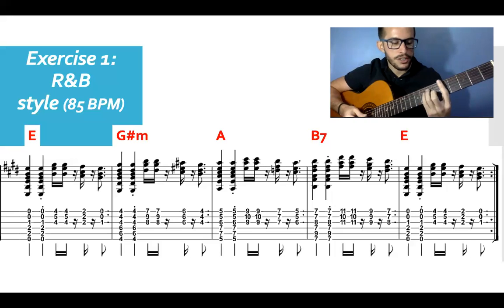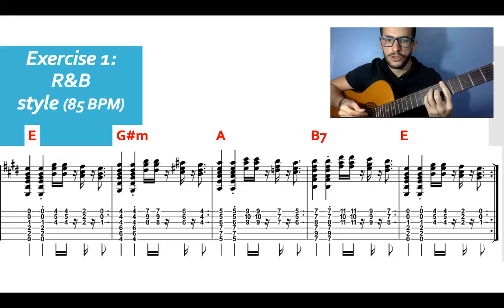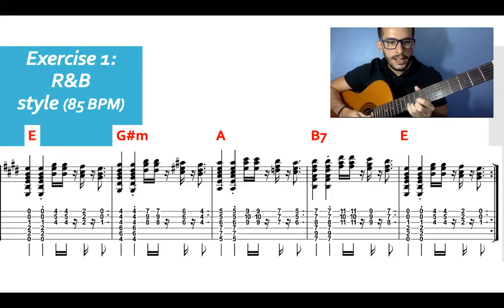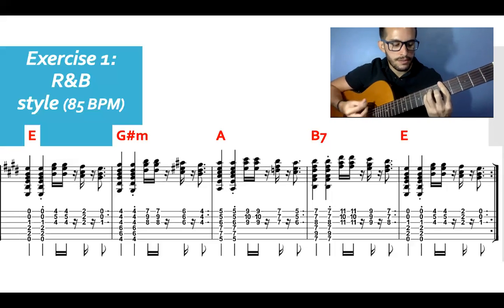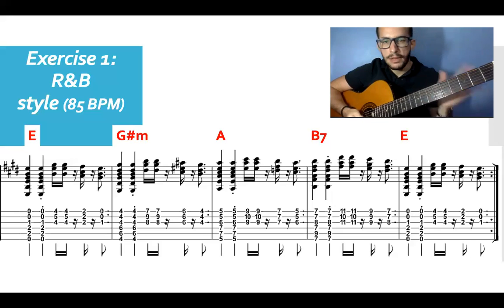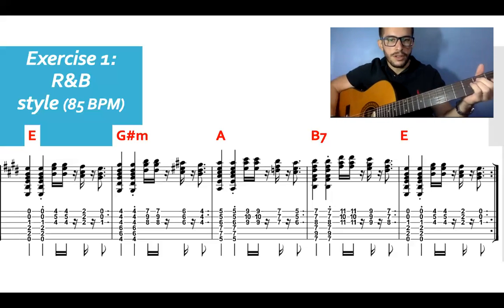Then we have the third bar which is in A. Same thing, one long one short. And then we have 9-10-9, 7-7-7, and 6-5-5. So the third bar is going to sound like this. Let me play the first three bars all together.